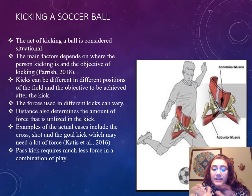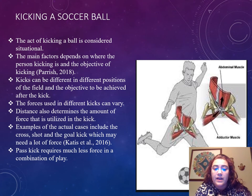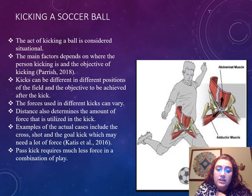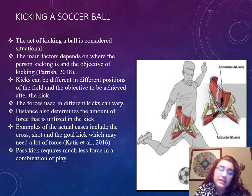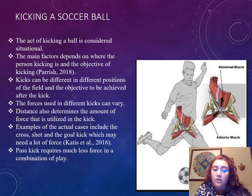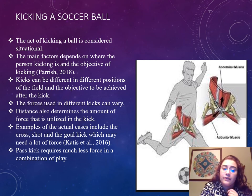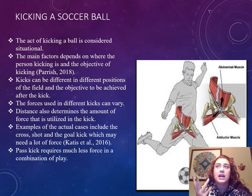So obviously, the act of kicking a ball is actually considered situational. There are many dependent factors — many things vary. For example, the forces used in different kicks can vary. The main objective is just kicking in general, but it can be achieved in various ways. The distance can also be determined by the amount of force utilized in the kick. One example is the cross shot and the goal kick, which may actually require a lot more force than we think, compared to a pass kick, which would use much less force because you're trying to aim for a player.